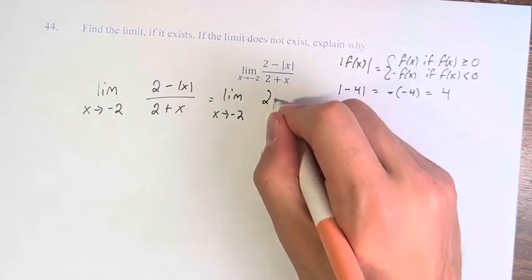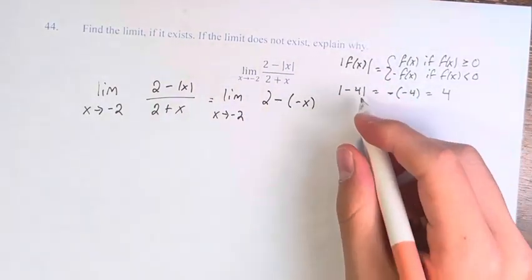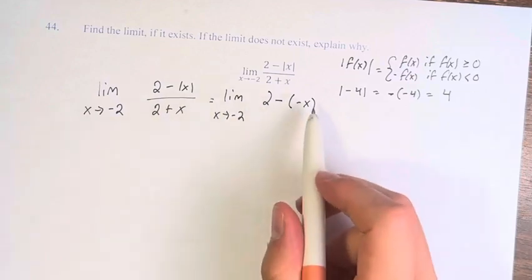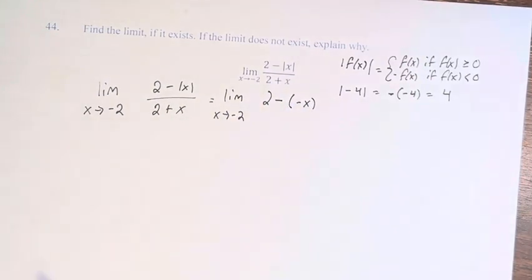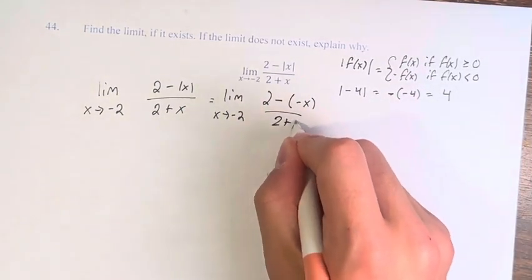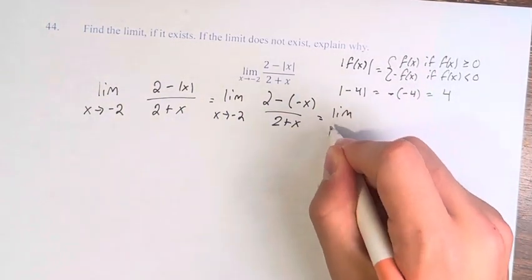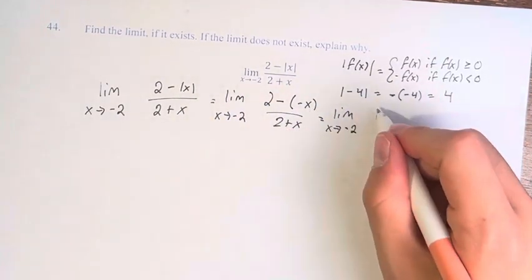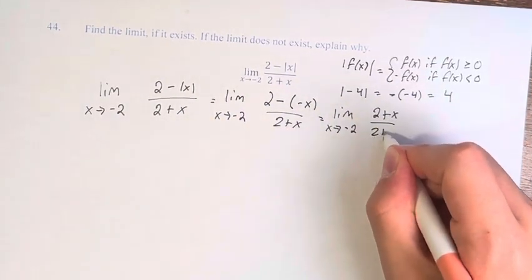It's less than 0, therefore you have to take the negative version of it when you're dropping the absolute value over 2 plus x. This is the limit as x approaches negative 2 of 2 minus negative x is 2 plus x over 2 plus x.